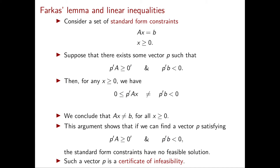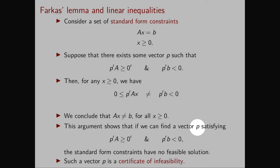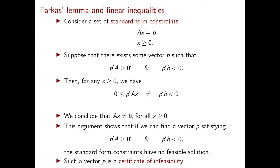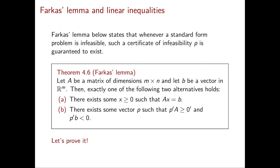So this is great. If we can find such a vector p that satisfies these conditions, then we do have a certificate of infeasibility. However, it's unclear at this point if such a certificate always exists for any infeasible system Ax equal to b, x greater than or equal to 0. Farkas Lemma then says that such a certificate of infeasibility p is always guaranteed to exist whenever the standard form problem is infeasible. So essentially there always exists such a certificate of infeasibility p no matter what system you start from.